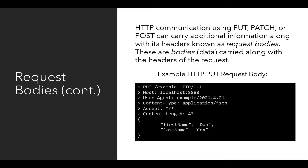Notice right here an additional example of the HTTP PUT request with a request body. It also has the same general headers, but in this case using the HTTP verb PUT instead of GET. Notice on the first line: PUT, the path slash example, the protocol HTTP/1.1, and the extra headers — host, user agent, content type, and accept. The content length, which in the previous example was 2, is now 43, and the request body is JavaScript Object Notation content with firstName: Dan and lastName: Cox.